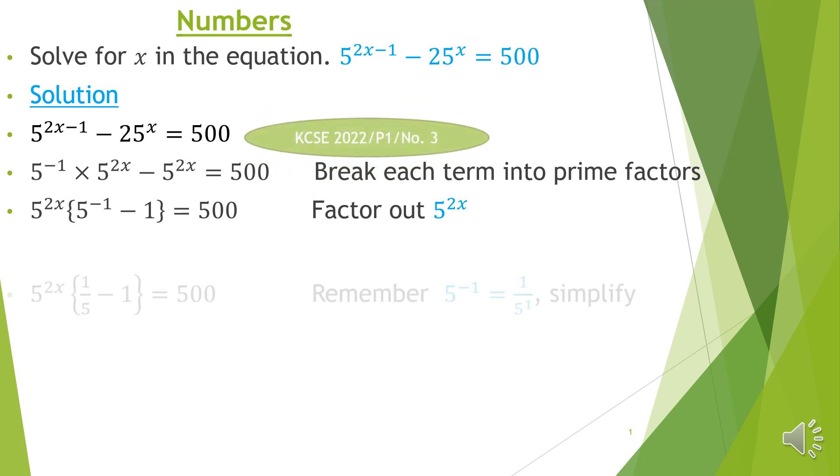Then next, we need to use this concept where 5 raised to negative 1 is the same as 1 over 5 raised to positive 1, the reciprocal. And therefore, we'll have the equation reading as 5 raised to 2x into 1 over 5 minus 1 close the bracket equals 500.